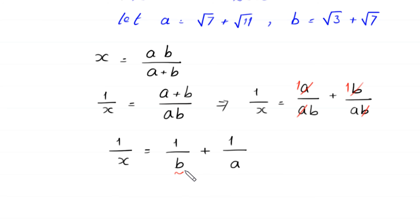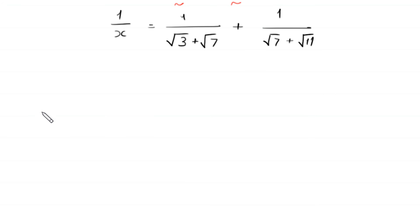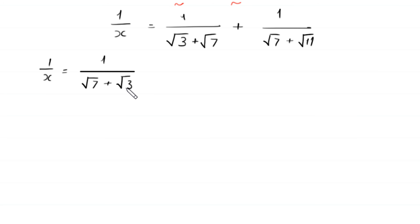We replace b with square root of 3 plus square root of 7, and a with square root of 7 plus square root of 11. So 1 over x equals 1 divided by square root of 3 plus square root of 7, plus 1 divided by square root of 7 plus square root of 11. We rewrite the first denominator as square root of 7 plus square root of 3 and rationalize it.